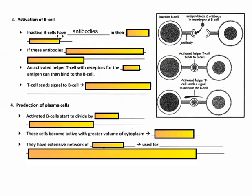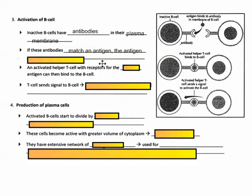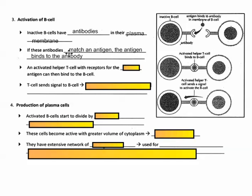Meanwhile, inactive B cells are flowing around — there are many different B cells, each specific, with different types of antibodies in their plasma membrane. You're hoping to have a B cell with an antibody that actually matches the antigen of the current invader.